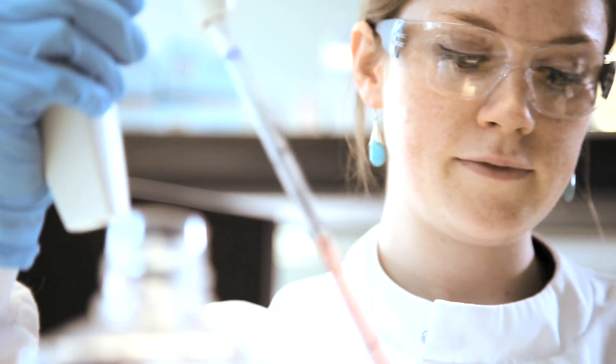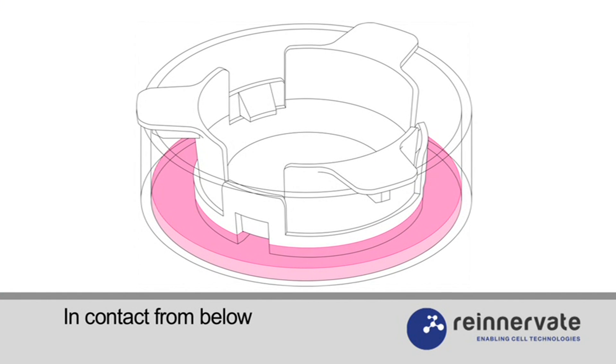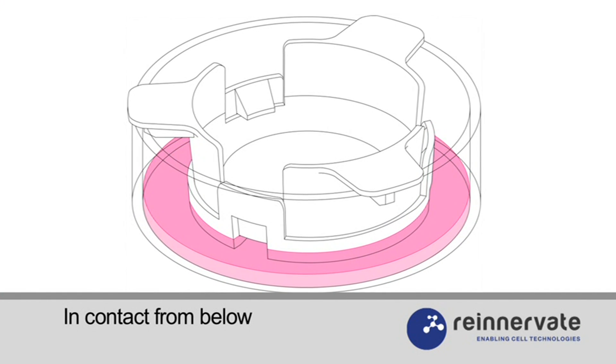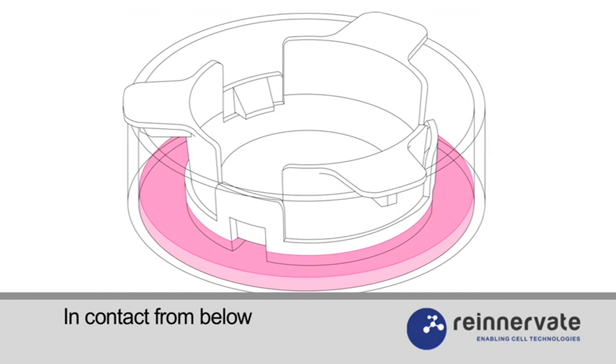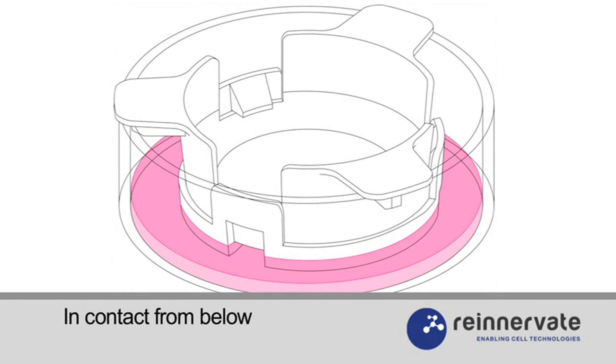For experiments such as the creation of artificial skin constructs, in which cells must be grown at the air-liquid interface, it's important that the medium is only in contact with the Alvatex from below the membrane. When using an insert in a six-well plate, use approximately 3.5 milliliters of media.